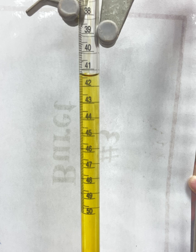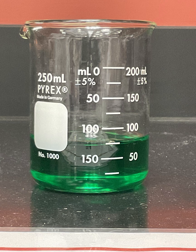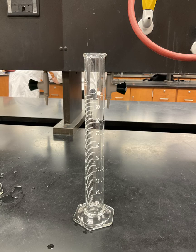For a burette, measure with two decimal places and pay attention to the meniscus. Beakers do not give that accuracy, so just estimate the number. Same thing for flasks, because these two are not measuring devices.